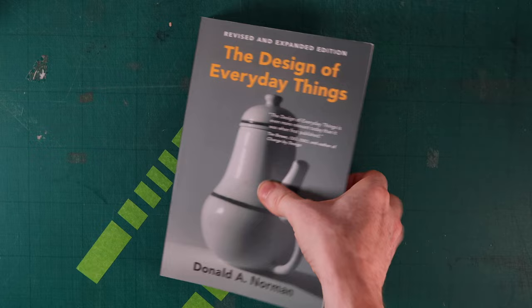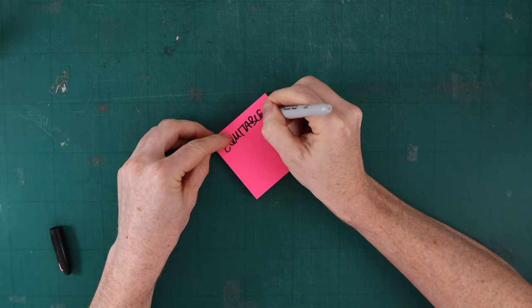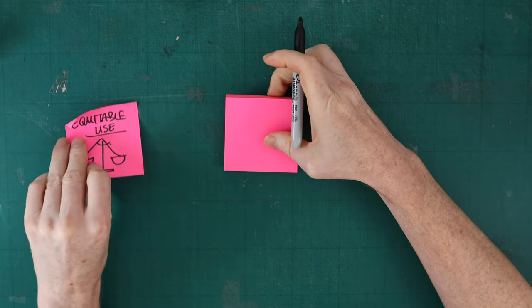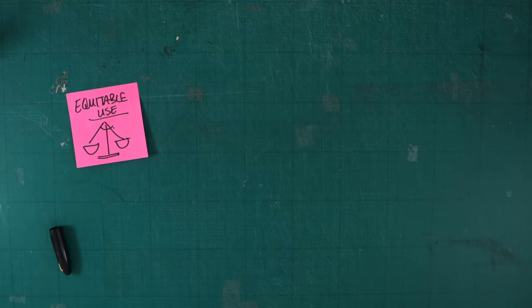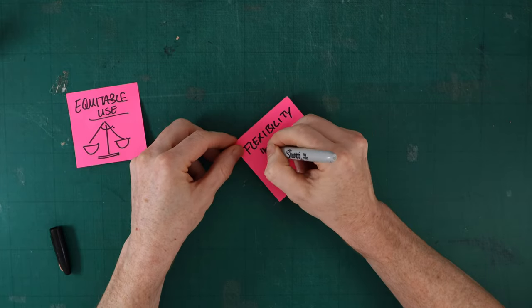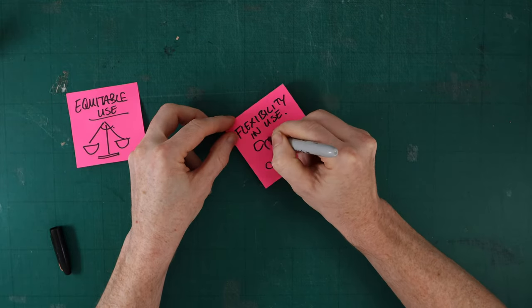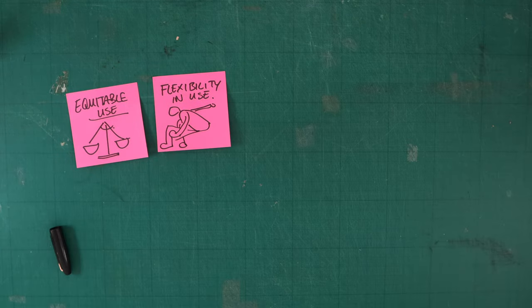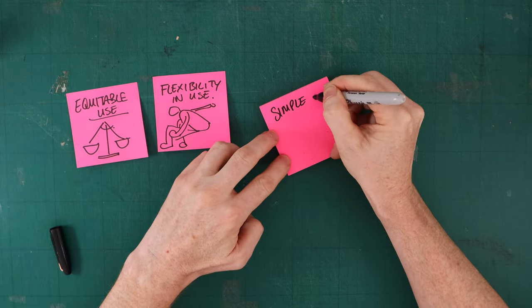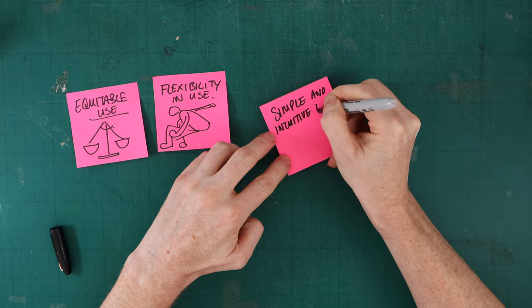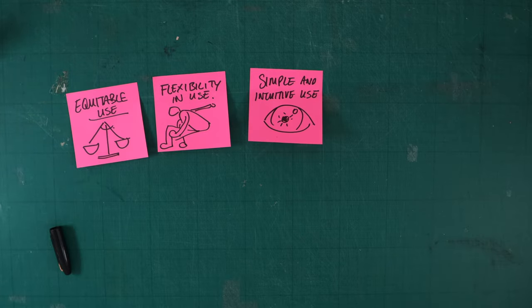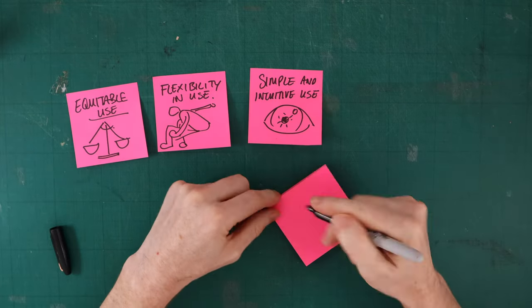Universal Design set out seven principles that should be considered when looking at designing outputs. Number one: equitable use — ensuring the design is useful and marketable to people with diverse abilities. Number two: flexibility in use — allowing a wide range of individual preferences and abilities through the design. Number three: simple and intuitive to use — making the design as intuitive as possible, regardless of the user's experience, knowledge, language skills, or current concentration levels.